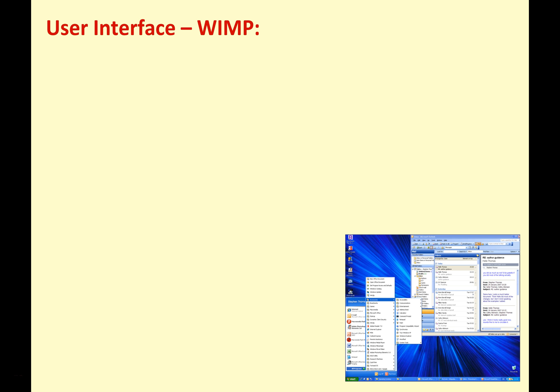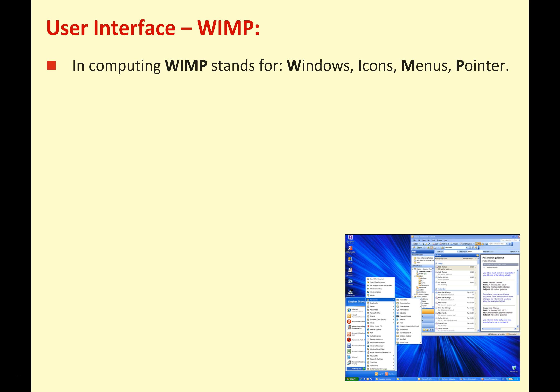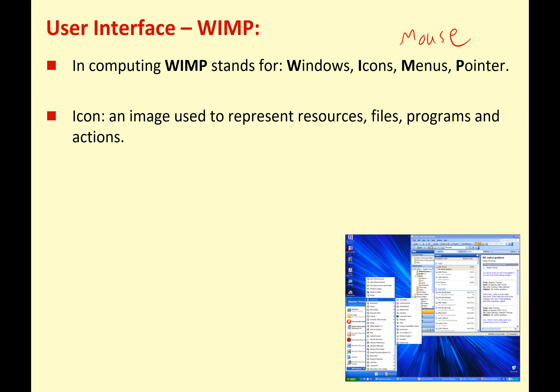While we're looking at graphical user interfaces, we need to know about WIMP. WIMP stands for Windows, Icon, Menus, and Pointer — sometimes you'll see the M stands for Mouse instead of Menu; either form is fine. Just remember that an icon is an image used to represent resources, files, programs, and actions. Here are a couple of examples, just a couple of icons on a desktop — this is a common way that graphical user interfaces use to represent files and programs.